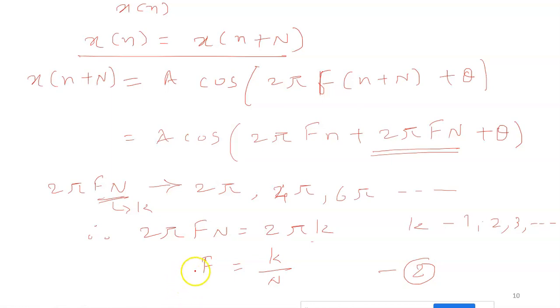I get Ts by T equals k by N. When this condition gets satisfied, the xN becomes periodic. To become xN periodic, this condition should be satisfied.